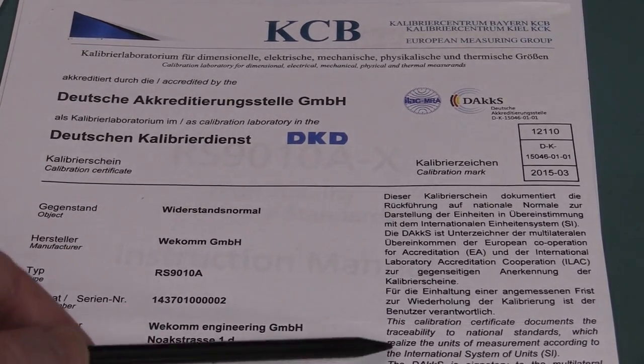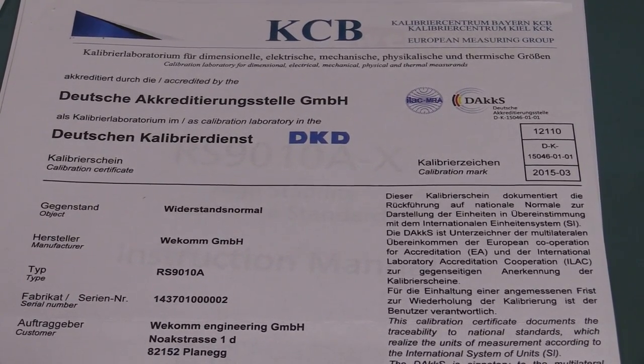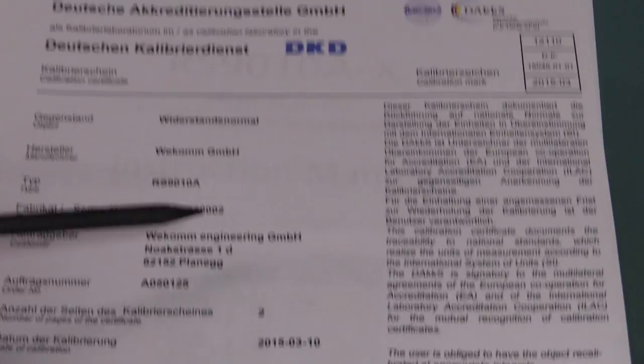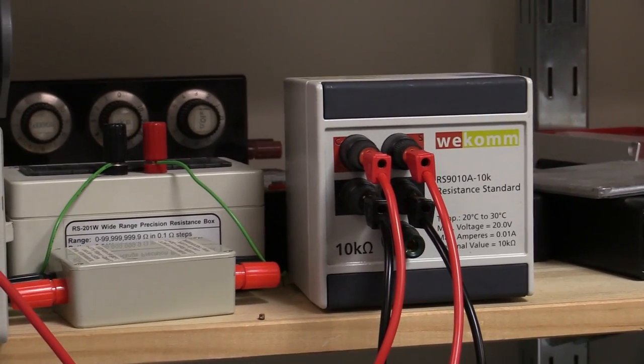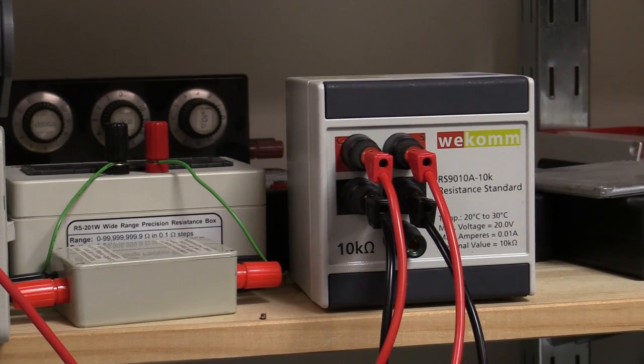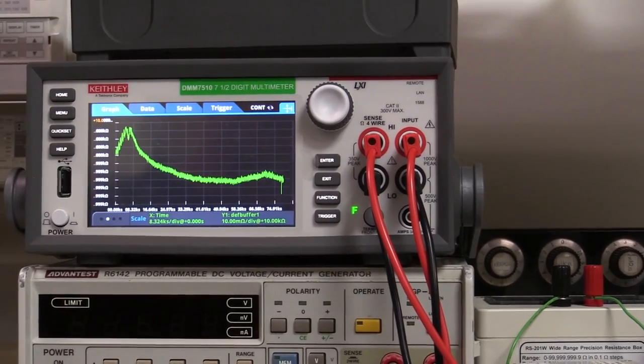This was one of the first units that they actually made. It's a new line that they're making, so this is one of the very first units that they actually built. Well, I'm pretty sure my meter is not good enough, you really need an eight and a half digit class meter really.